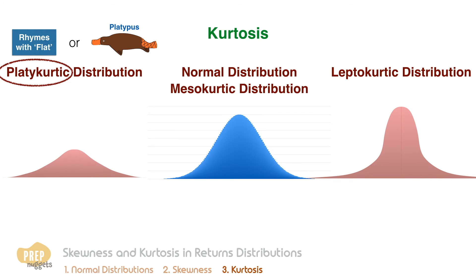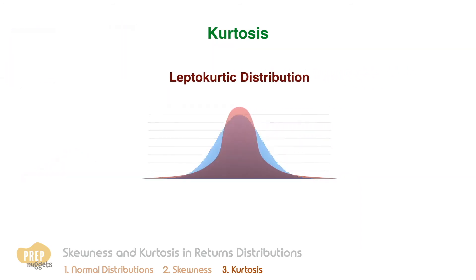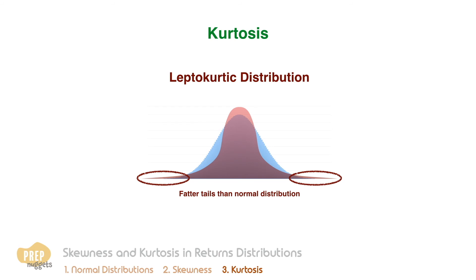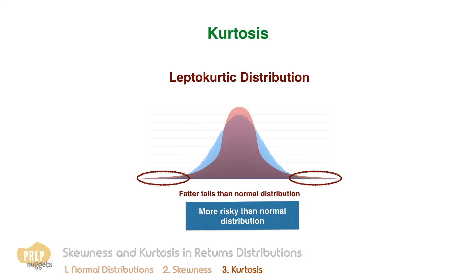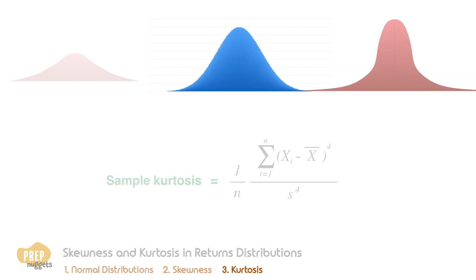Note that in the case of a leptokurtic distribution, the tails are fatter than those of the normal distribution. When modeling investment returns, this suggests that assets with a leptokurtic distribution are more risky than those with a normal distribution. Hence, the study of kurtosis is important in risk management applications.